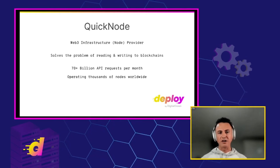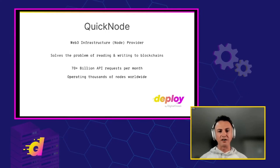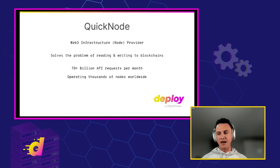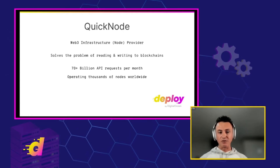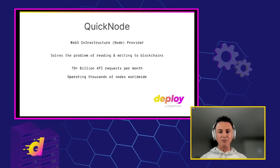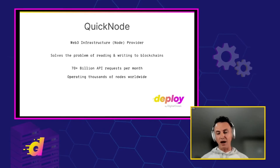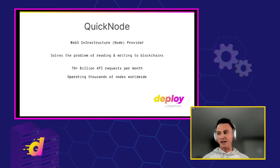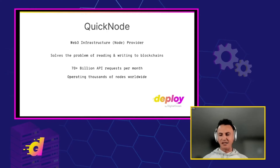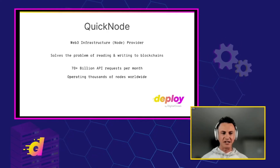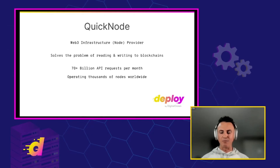What is QuickNode? We are a Web3 infrastructure provider. We solve the problem of reading and writing to blockchains at scale. Today we built a platform that serves over 70 billion API requests per month, and we operate thousands of nodes worldwide. There's a lot of complexity that goes into building a robust, reliable, highly available network.